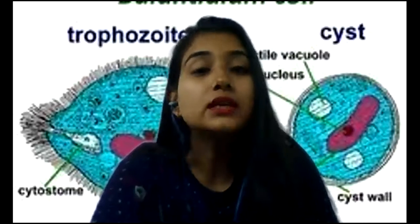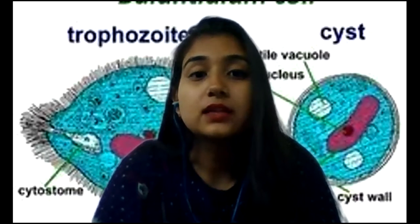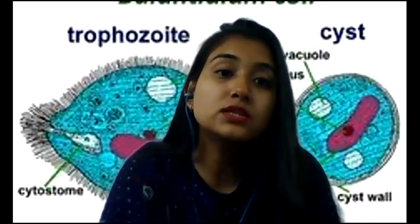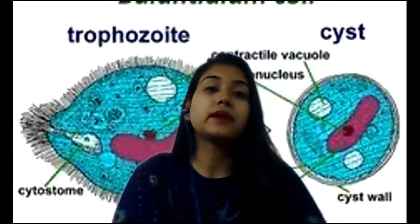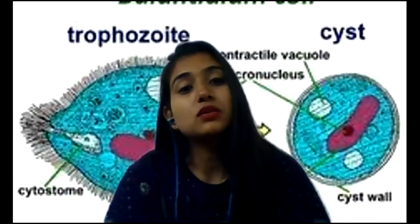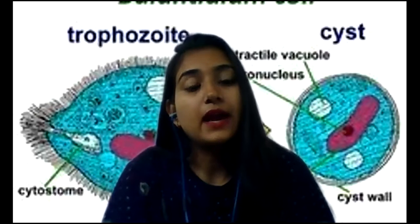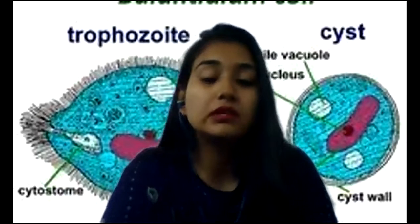Culture: media used include Balamuth's and egg-based media. Culture is rarely necessary as parasites are usually identified through microscopy or histopathology. Scrapings of the mucosa can be stained with H&E.